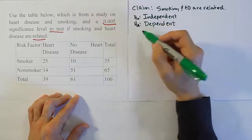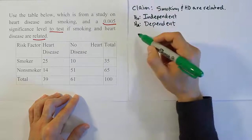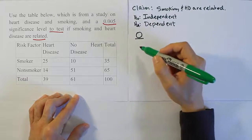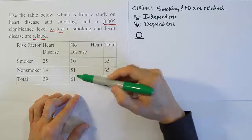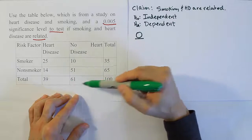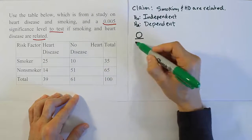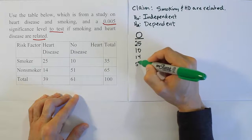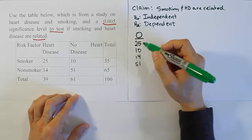From there we're going to work with the data. I'm just going to put the observed values here in a column, and we'll work straight across. The observed values are just these four cells; all the other cells are totals. Let's put the four cells down here: 25, 10, 14, and 51.